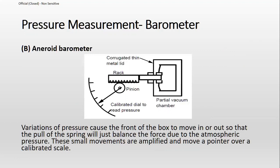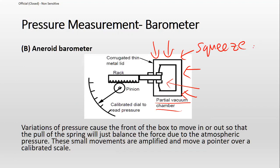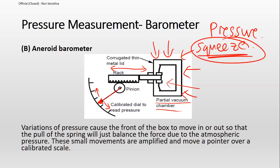There are other types of barometers for general knowledge — not required for exams. The aneroid barometer has a concept similar to the mercury barometer. It has a partial vacuum and a corrugated metal bellows box. The outside pressure squeezes this box, causing a reaction in a rack-and-pinion component. This movement causes a pinion attached to a needle to move, reading the pressure.